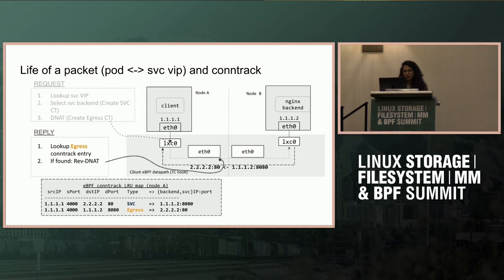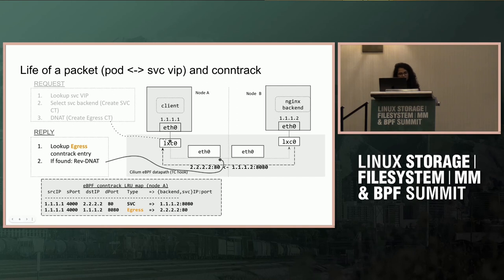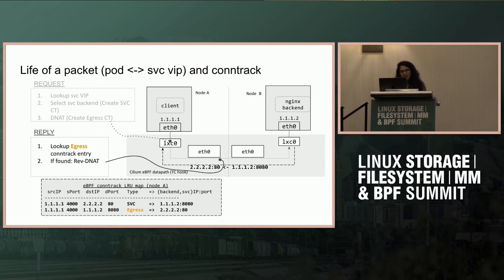Let's look at the reply path. The NGINX backend pod on node B replies back to the client — that's 1.1.1.2 going back to 1.1.1.1. This reply matches the egress conntrack entry that Cilium created on the forward path, the second entry in the conntrack table. It says the destination address needs to be reverse-translated back to the original service IP address the client was connecting to — from 1.1.1.2 back to service VIP 2.2.2.2 — and then the packet is handed over to the client pod.